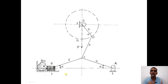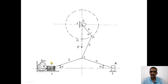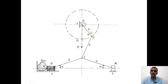Let us see how the mechanism works. Point A is where link four connects to the fixed pivot. Point B is the slider. Point C is where links four and five are held together. Point D is where links two and three are held together. Point E is where link two, the crank, is connected to the support. Now let us assume the crank rotates in the clockwise direction, currently at point D.